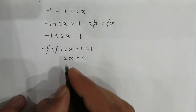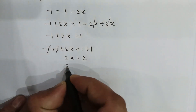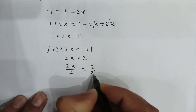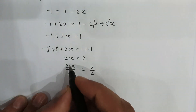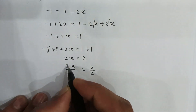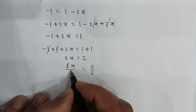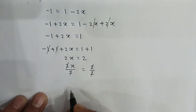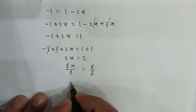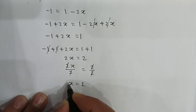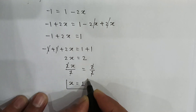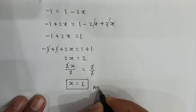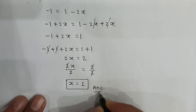Divide both sides by 2. 2x divided by 2 is equal to 2 divided by 2. The 2s cancel out, giving x is equal to 1. So the answer to this question is 1. Thank you guys.